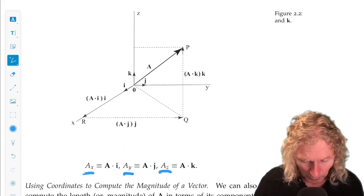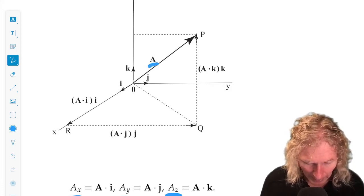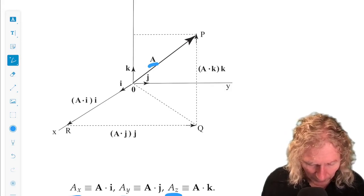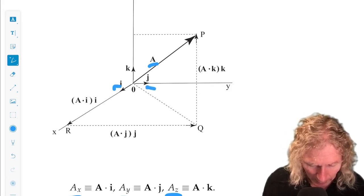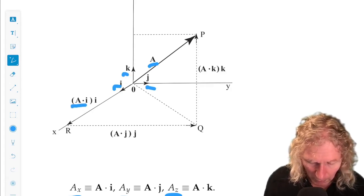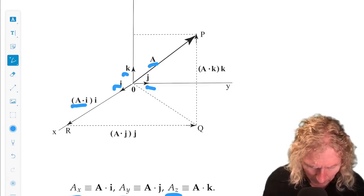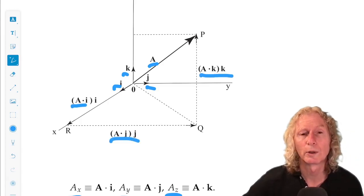So this is the picture we have of the general vector a, and the coordinate system i, j, and k, and the projections along each of the coordinate directions.